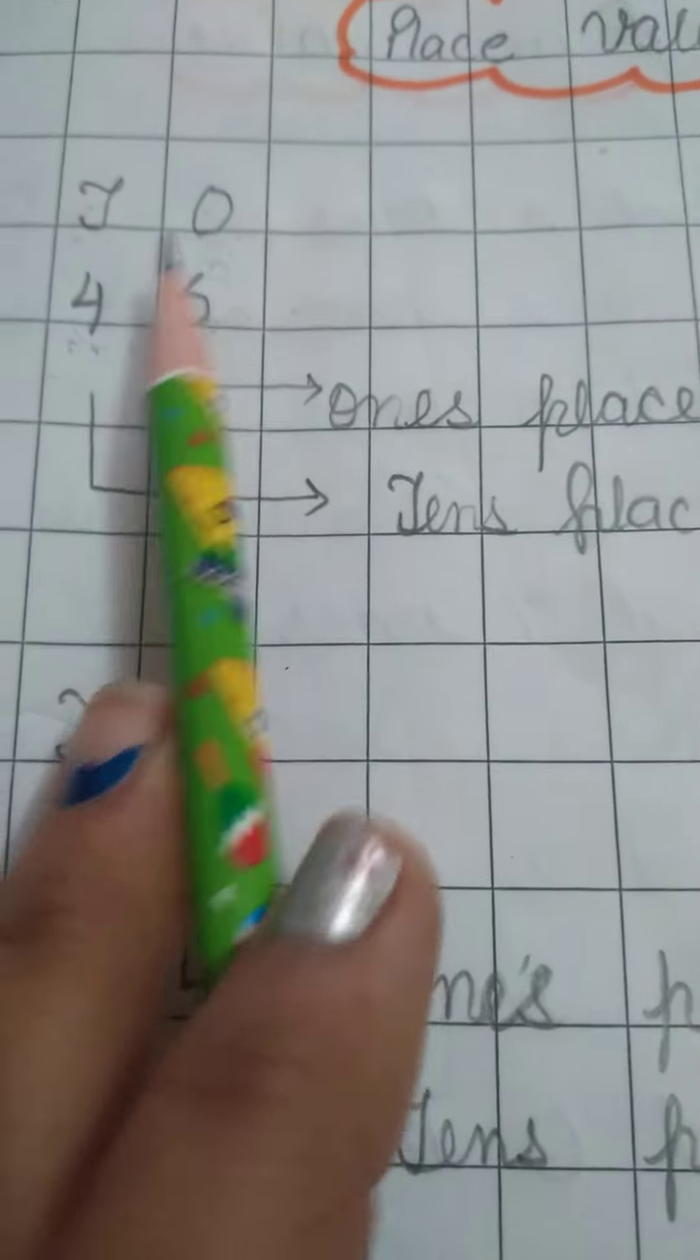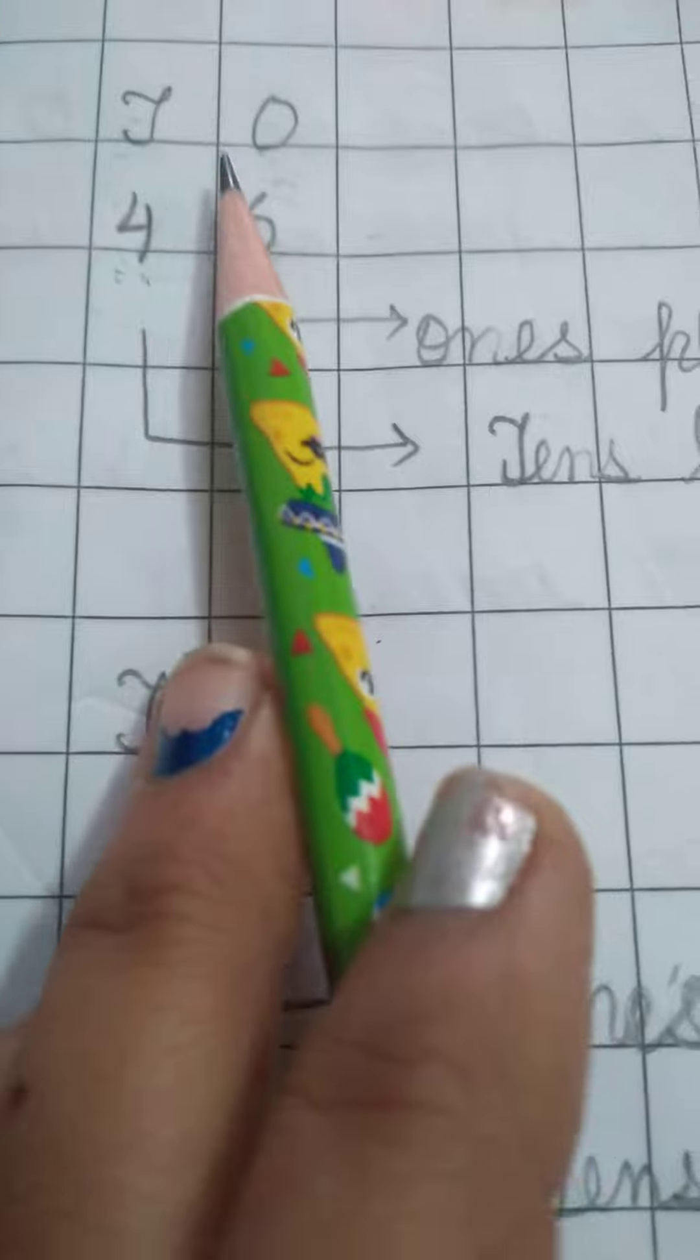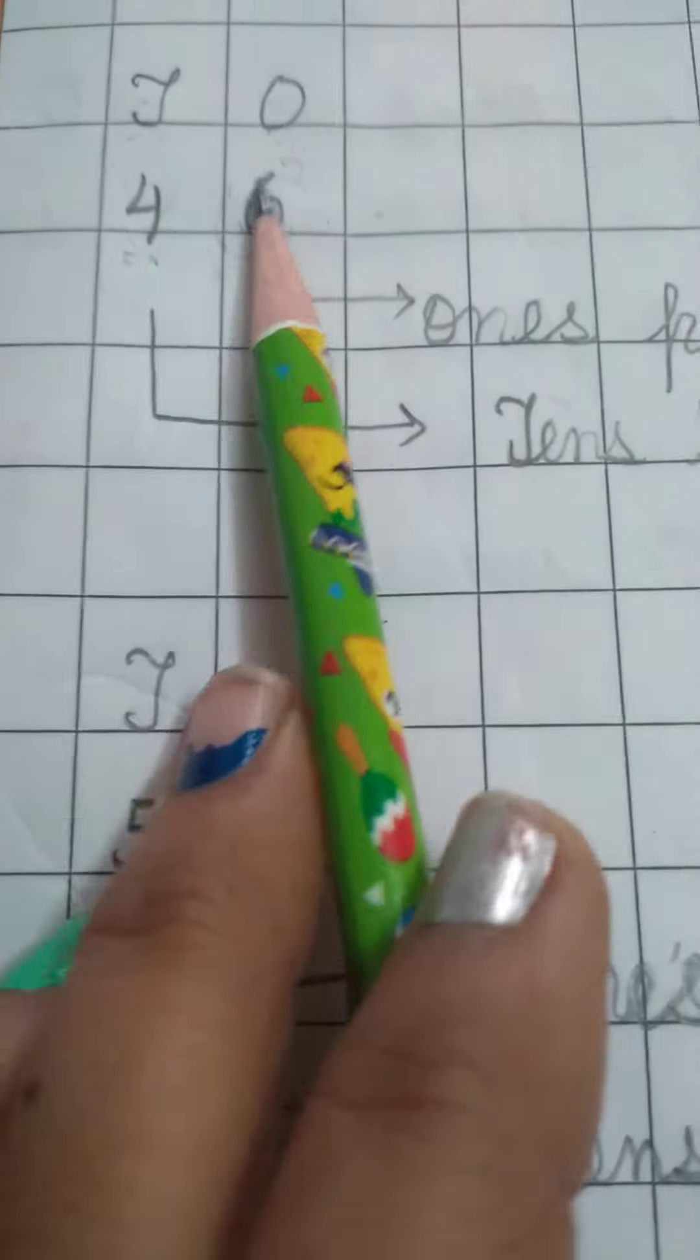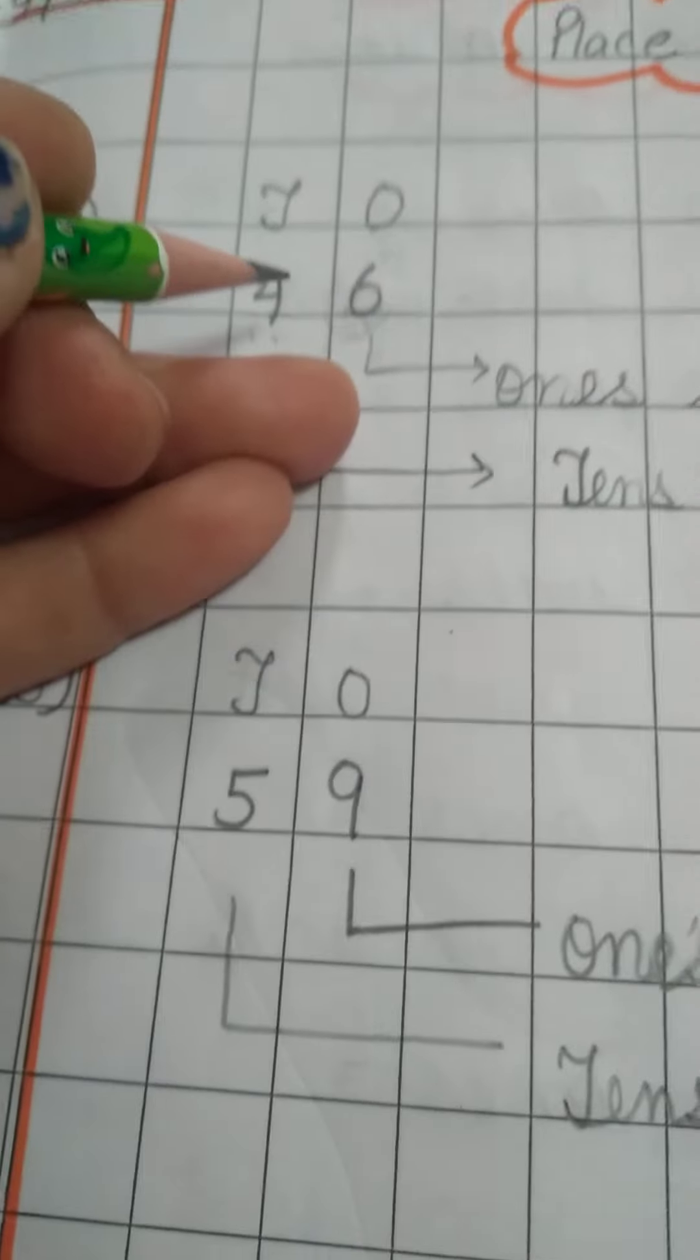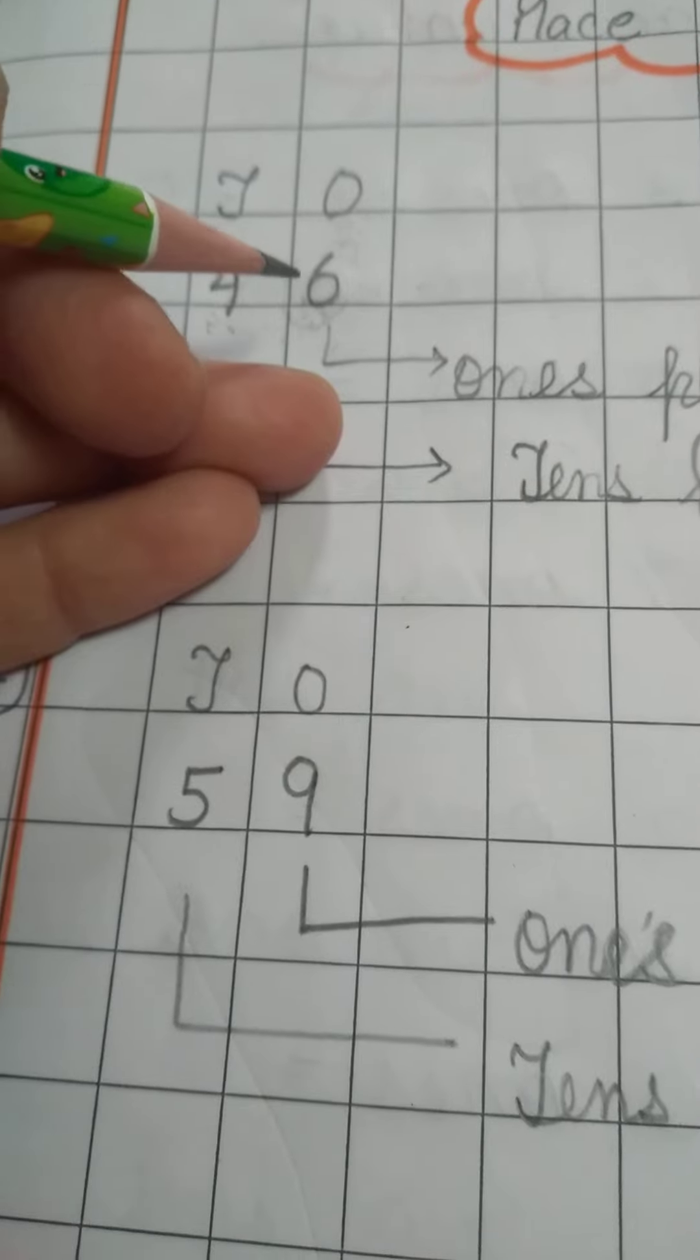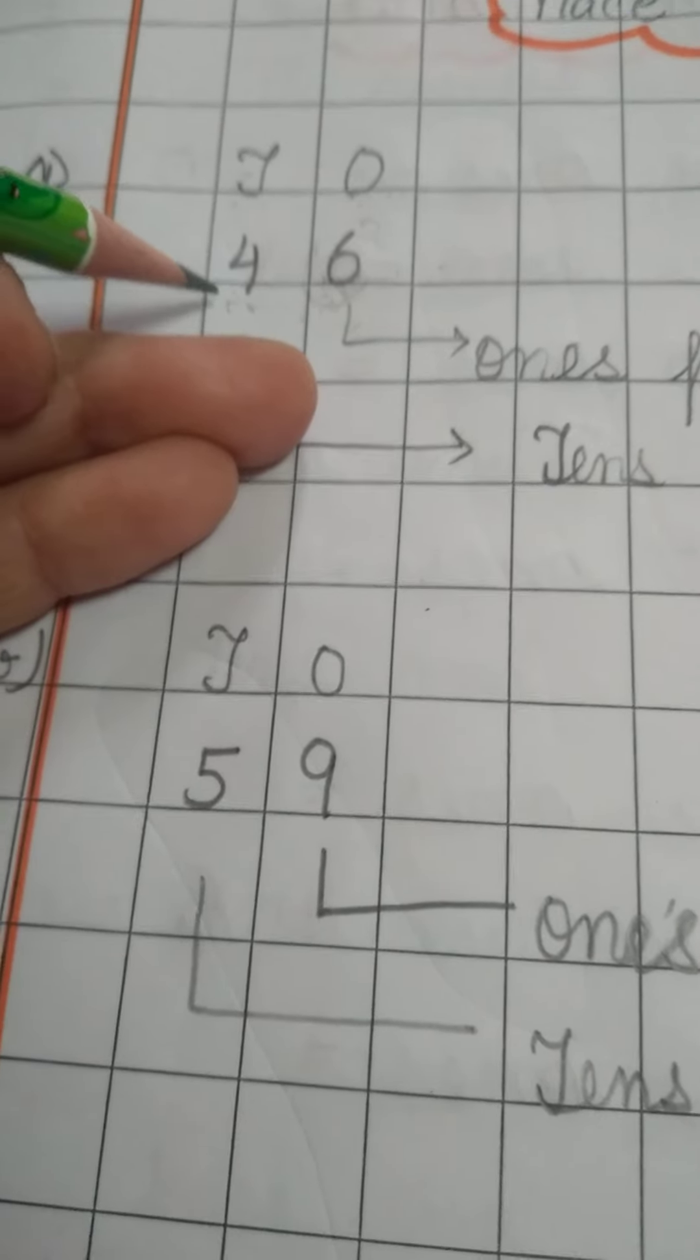If we have two numbers like 46, where do we write it? We write below the heading of T-O because these are two numbers. So 46. The place of 6 is ones, and the place of 4 is tens.